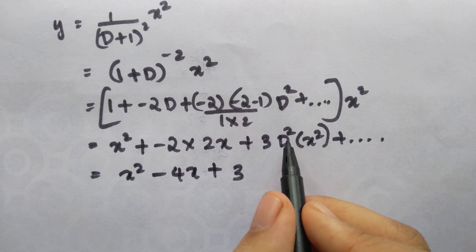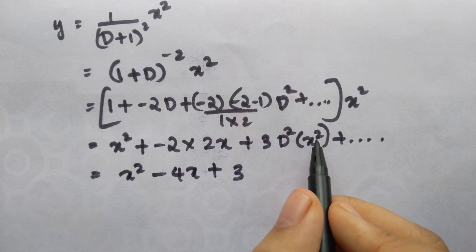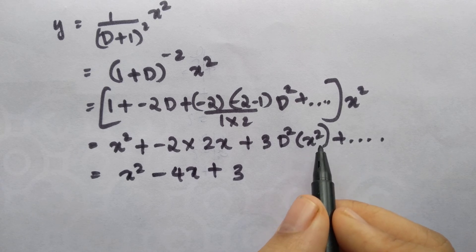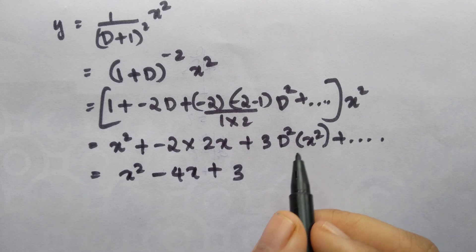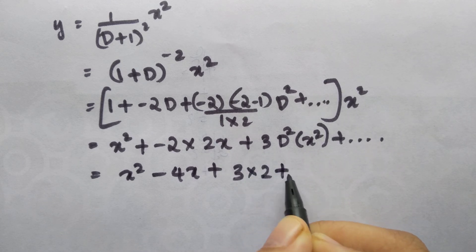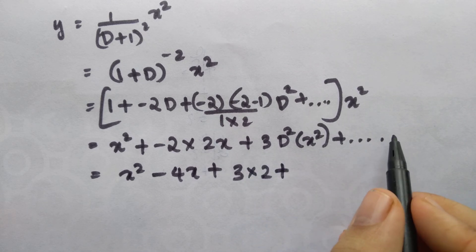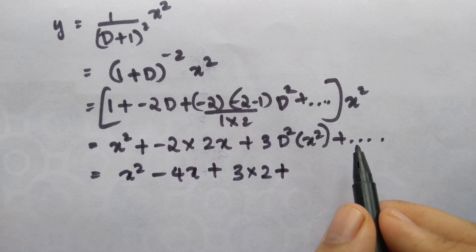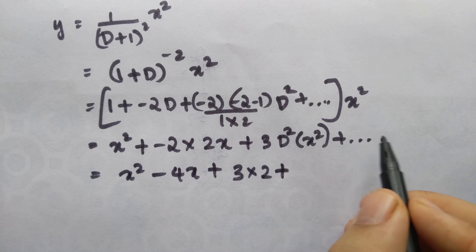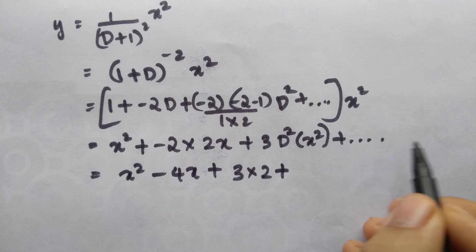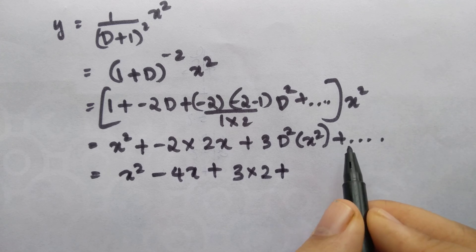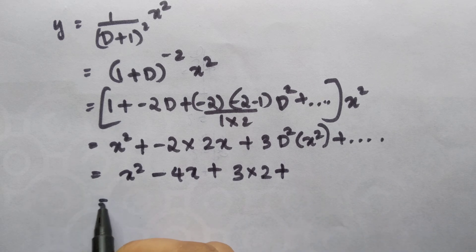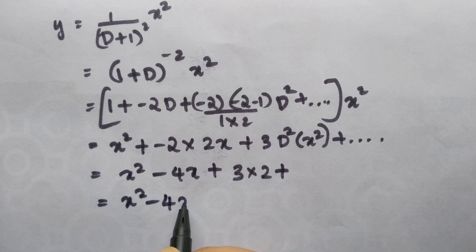The second derivative of x square: first derivative of x square is 2x, and the second derivative of 2x is 2. So 3 times 2 equals 6. Higher-order terms involve the third derivative and beyond, which are all zero for x square, so those terms terminate. Therefore the particular integral becomes x square minus 4x plus 6.